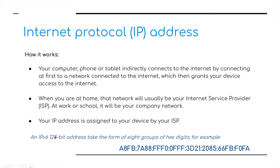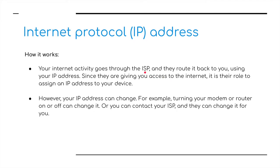There is IP version 6, which is 128-bit, and also IP version 4, which is 32-bit. IP version 6 is 128-bits and the number looks something like this. Your computer, phone, or tablet indirectly connects to the internet by connecting first to a network connected to the internet, which then grants your device access. When you're at home, the network will usually be your Internet Service Provider — your ISP. At work or school, it will be the company's network. Your IP address is assigned to your device by your ISP, and your internet activity goes through the ISP, who route it back to you using your IP address.